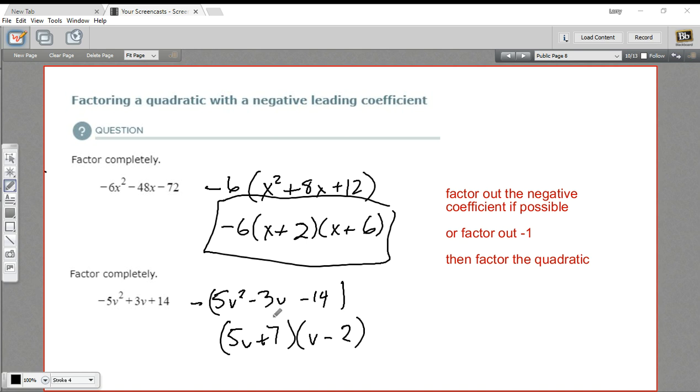So I'm testing for the middle term here. I multiply the outside terms and the inside terms and add them together. 5v times a negative 2 is negative 10v. And 7 times v is a positive 7v. That does add up to a negative 3v. So if you foil all this out, you should get this. For our final answer, we don't want to forget this negative sign. That's part of the answer. So we have a negative sign times 5v plus 7 times v minus 2. And that is our final answer.